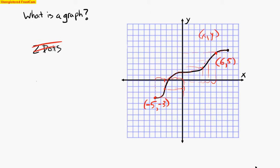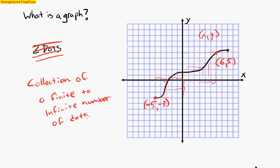a collection of a finite to infinite number of dots. And each dot is an X and a Y. Each dot has an X part and a Y part.